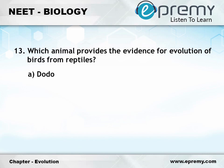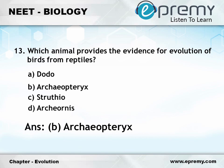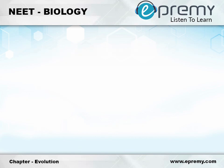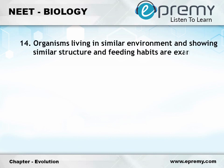Question number 13: Which animal provides the evidence of evolution of birds from reptiles? Option A: Dudu. Option B: Archaeopteryx. Option C: Struthio. Option D: Archeonis. And the answer is Option B: Archaeopteryx.